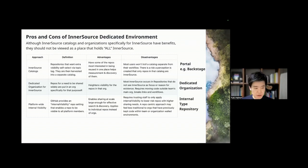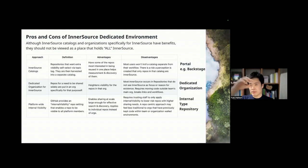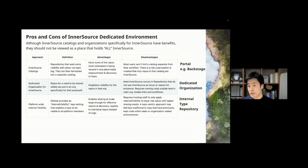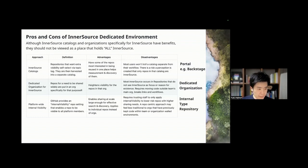You can also use the internal type repository. In GitHub, there is a specific type of repository called internal visibility. Under GitHub Enterprise Cloud, if you are part of the enterprise member, you can see this internal-type repository. So if your project is open for everyone inside the company, you can pick this repository type for your project.